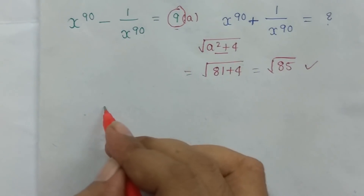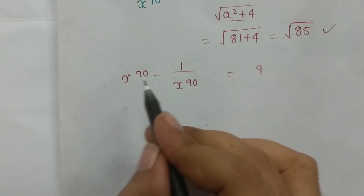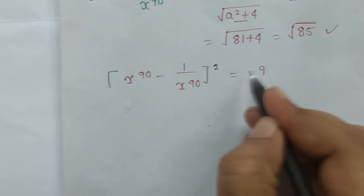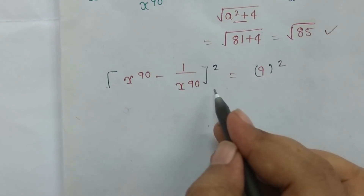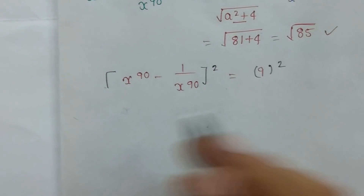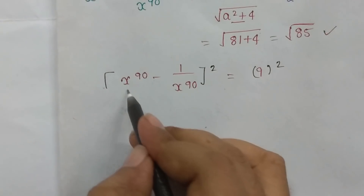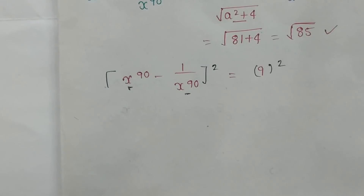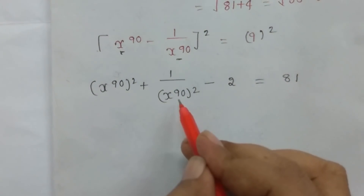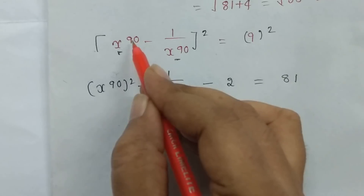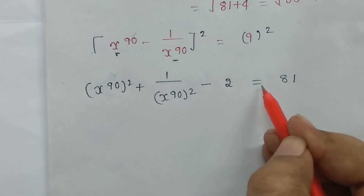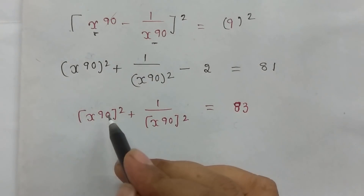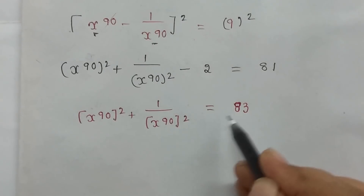This is the normal method. x^90 minus 1/x^90 is equal to 9. I will work it out. Using the a minus b all square formula: a² + b² minus 2ab expanded. The 2ab cancels. So x^90 all square plus 1/x^90 all square is equal to 9² minus 2, which is 81 minus 2 equals 79... giving 81 + 2 = 83.